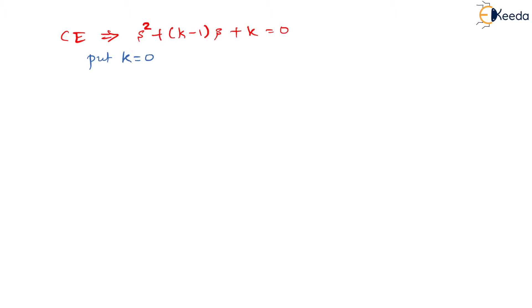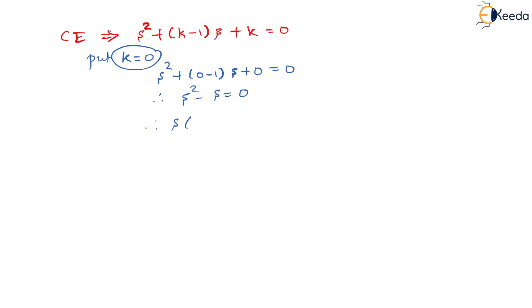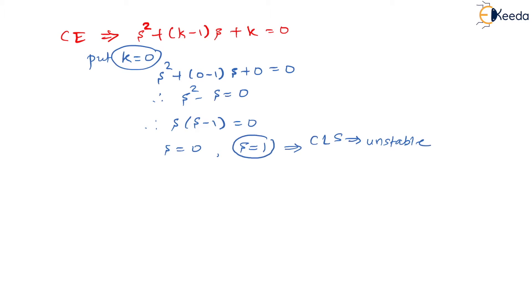For K equal to 0: the equation becomes s² - s = 0, so s(s-1) = 0, giving s = 0 and s = 1. The closed loop system is also unstable because we have one pole on the right half of the s-plane. These are closed loop poles — roots of the characteristic equation.